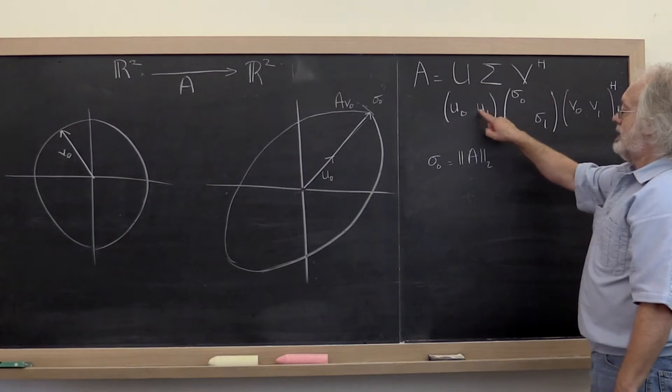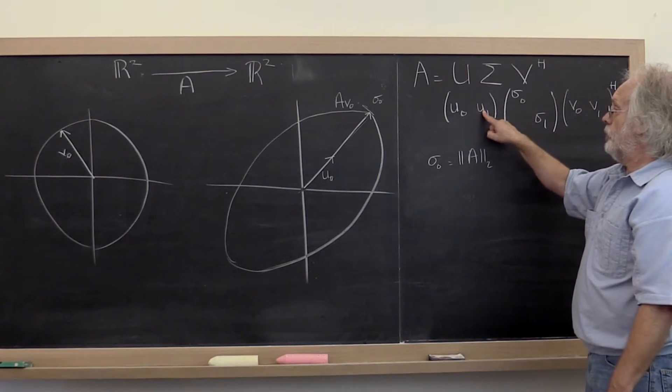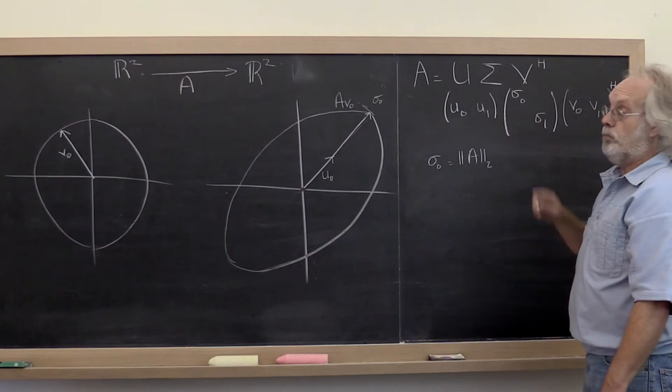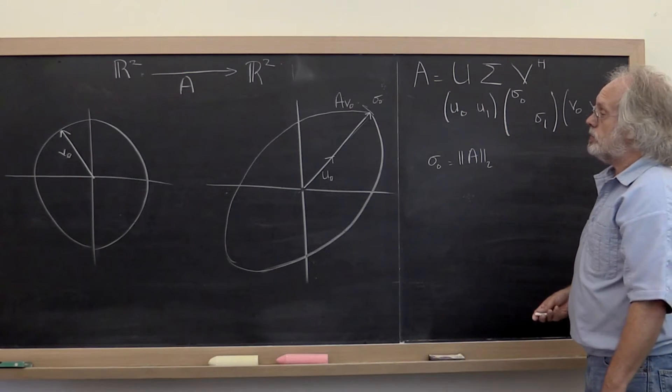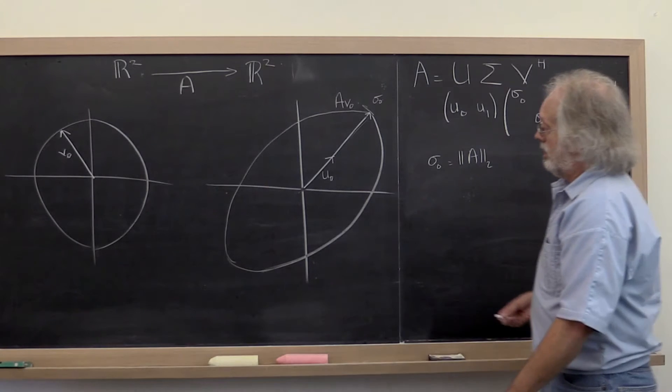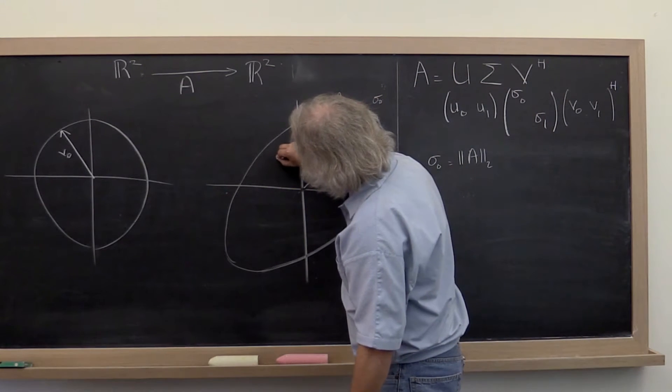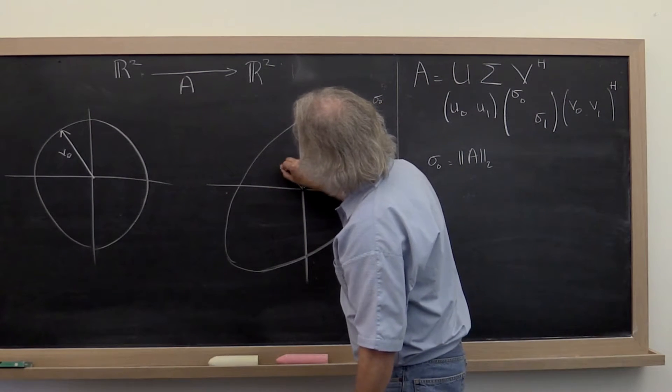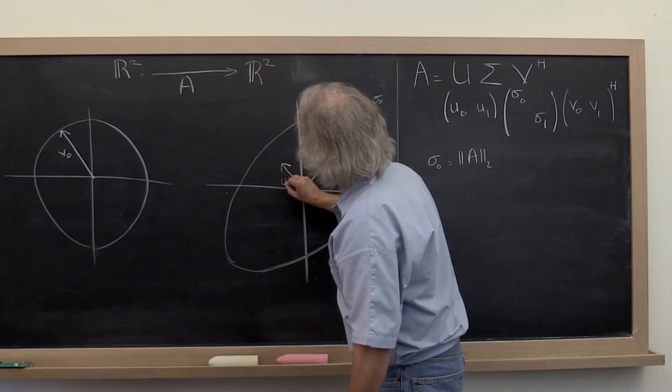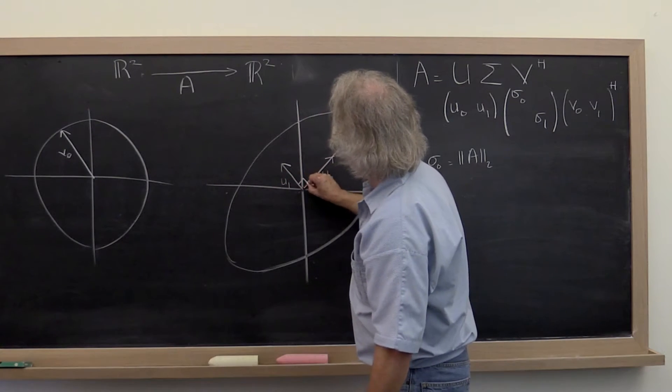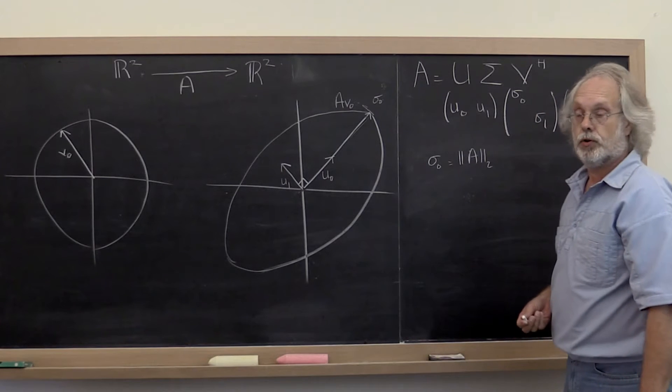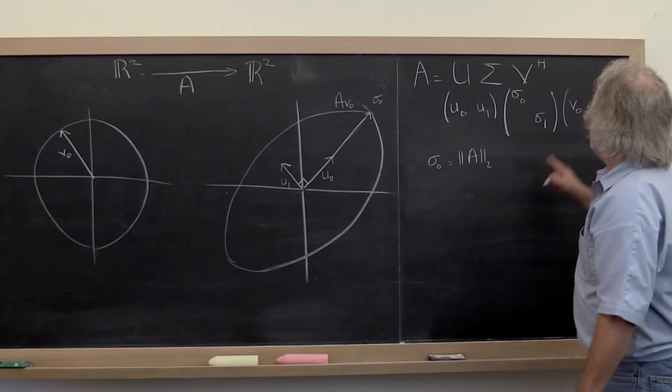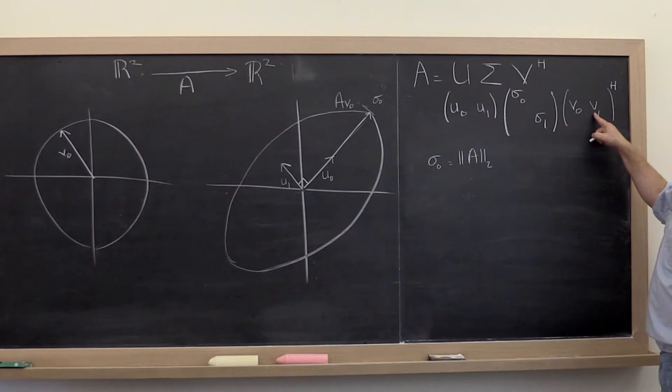We then said, let's fill out U with an orthonormal basis. So what that meant was that we found another vector of unit length, U1, which must be perpendicular, orthogonal.